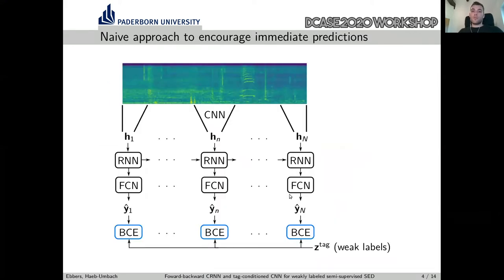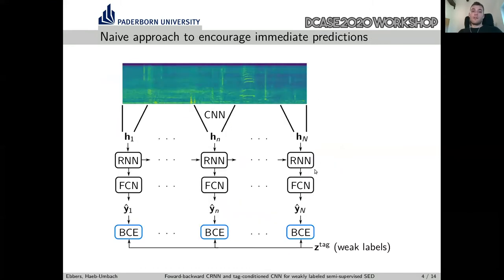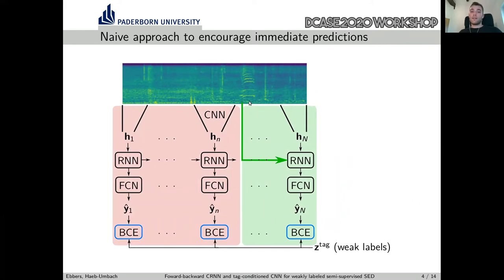To encourage the model to make immediate predictions, one might think to simply do the loss evaluation at each frame. However, this would mean that for events that appear only at the end of a signal — the cat can be seen here in the spectrogram — we would force the model to predict the event prior to the event, before it has processed it. This is the highlighted area here, and this might degrade performance.